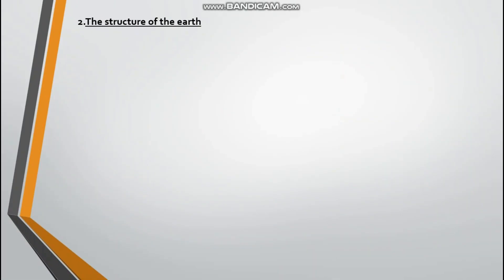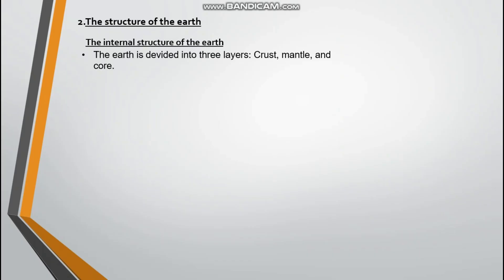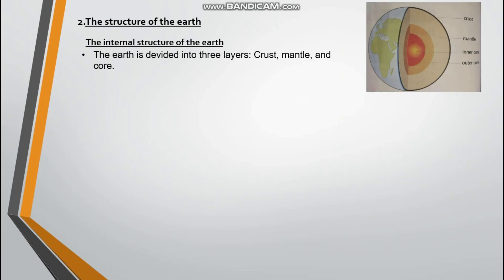The structure of the earth — the internal structure. The earth is divided into three layers, namely the crust, mantle, and core. As you can see in the picture, there's the crust, the mantle, and then there is the outer core and inner core.